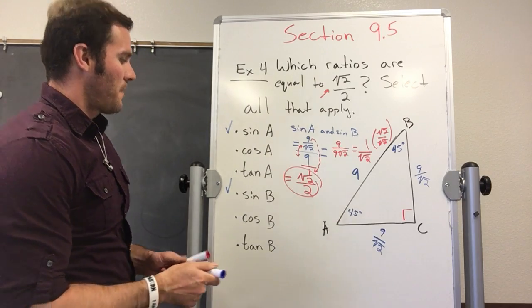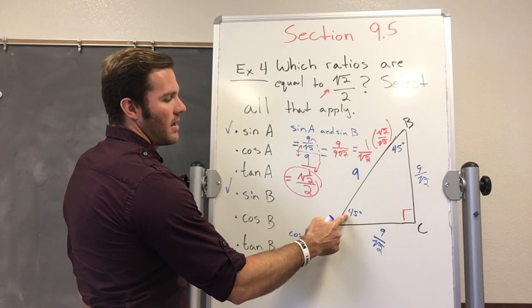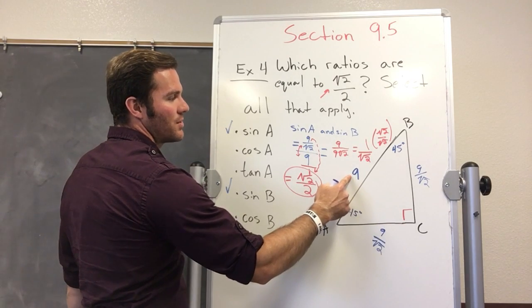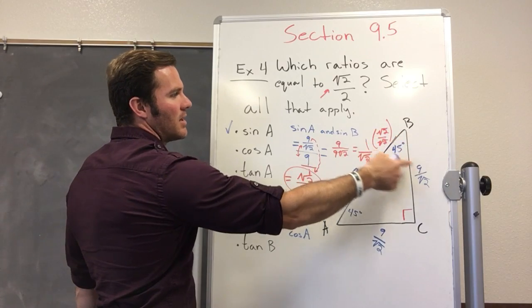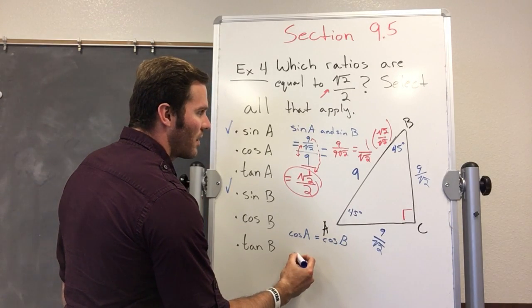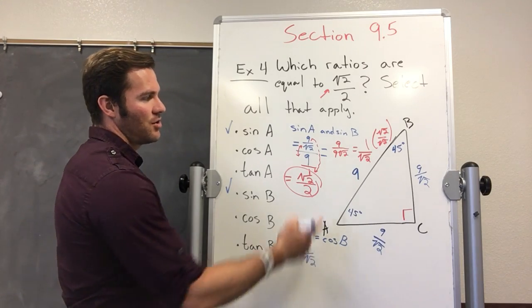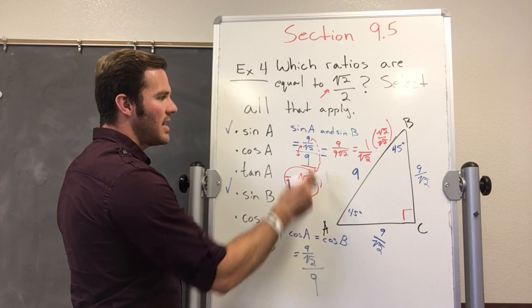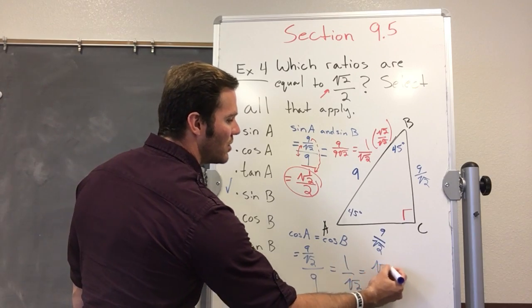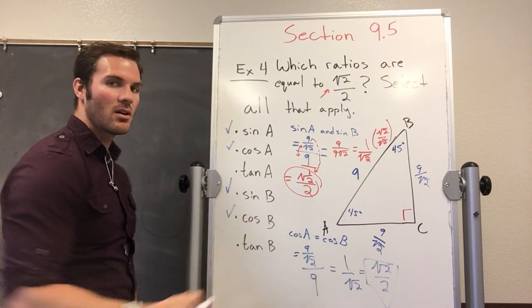Now let's look at cosine. Cosine A is, here's A, adjacent over hypotenuse. Cosine B, adjacent over hypotenuse. They are the same. So that's going to be 9 over square root of 2 over 9, the hypotenuse. That's exactly like this. So we know that that's going to come out to be 1 over square root of 2, which is going to be square root of 2 over 2. Same answer. So cosine A, cosine B are all part of it.